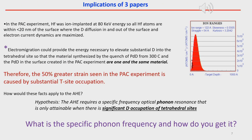The implication of these three papers is as follows. In the PAC experiment, hafnium was ion-implanted at 80 kilovolt energy, so all hafnium atoms are within less than 20 nanometers of the surface, where D-diffusion in and out of the surface and electron current dynamics are maximized. The electromigration could provide the energy necessary to elevate substantial D into the tetrahedral site, so the material synthesized by the quench of palladium deuteride from 300°C and the palladium deuteride in the surface created by the PAC experiment are one and the same material. Therefore, the 50% greater strain seen in the perturbed angular correlation experiment is caused by substantial T-site occupation.